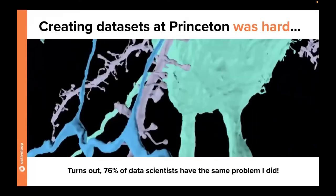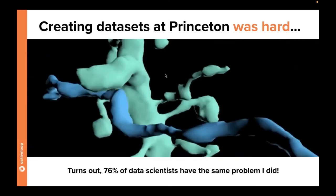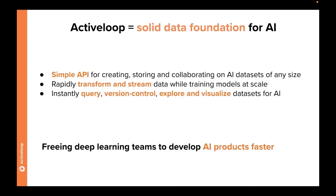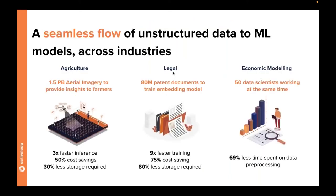Not only inside our lab but also in other labs and across the industry — especially in the imaging space — we've seen the same problems. At Active Loop, what we provide is a very simple API for creating, storing, and collaborating on AI datasets of any size, rapidly transforming and streaming data while training models at scale, and instantly querying, version-controlling, and visualizing datasets directly in your browser.